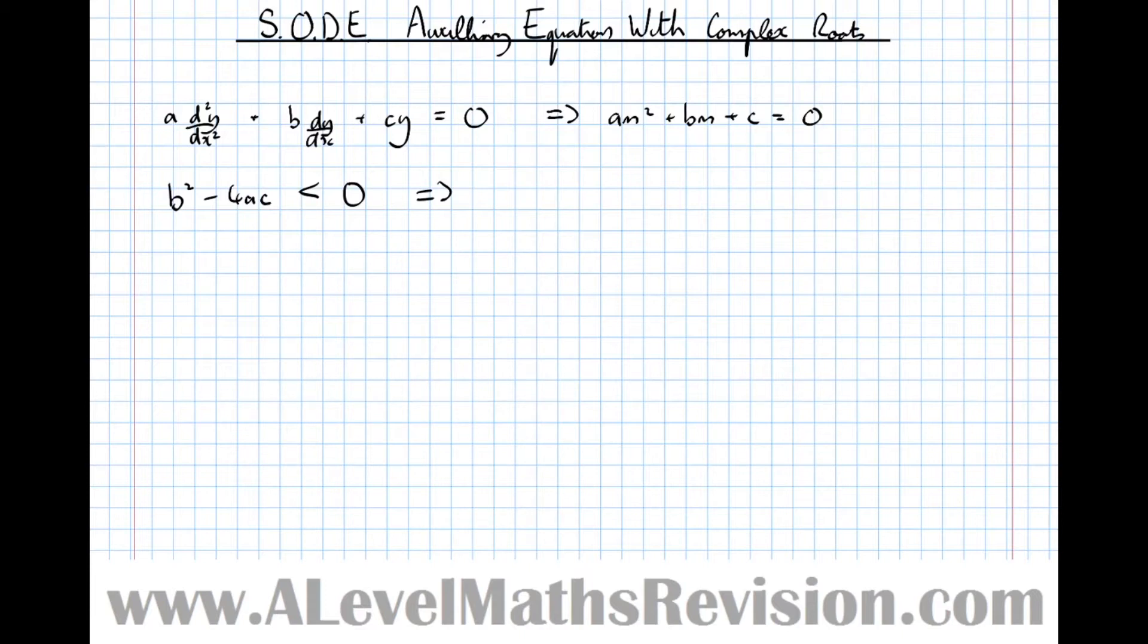So if b² - 4ac is less than 0, that gives two roots to the auxiliary equation. Then root 1, m₁, which is α + βi. And the complex conjugate of that must also be a root. So therefore, α - βi must be a root as well. So keep an eye on these numbers, α and β.